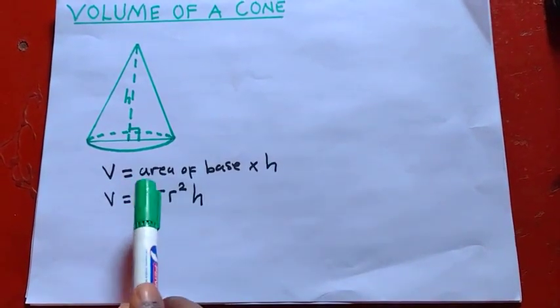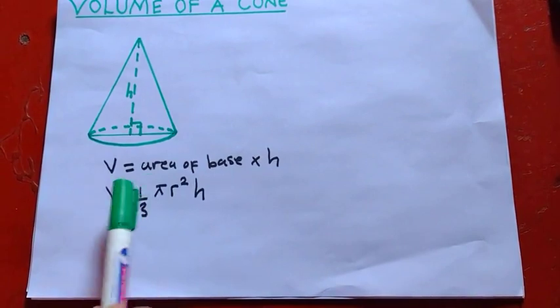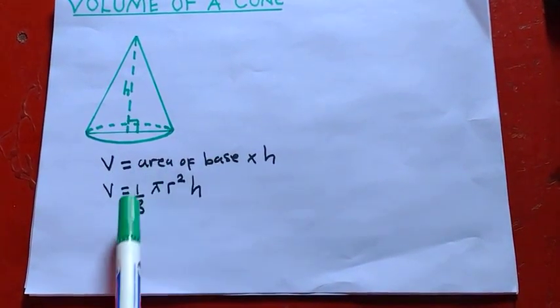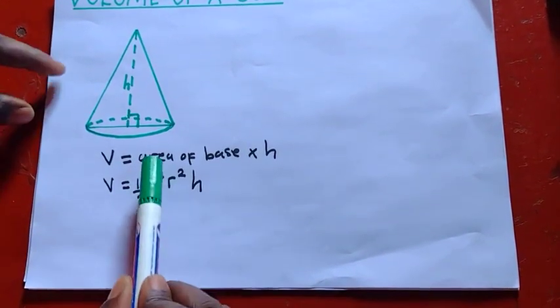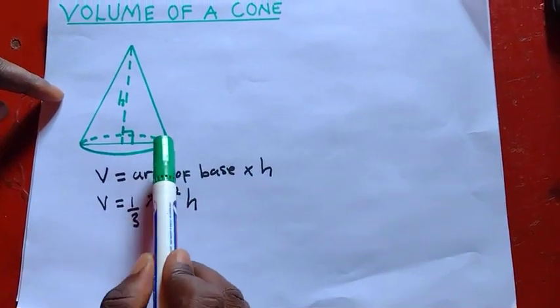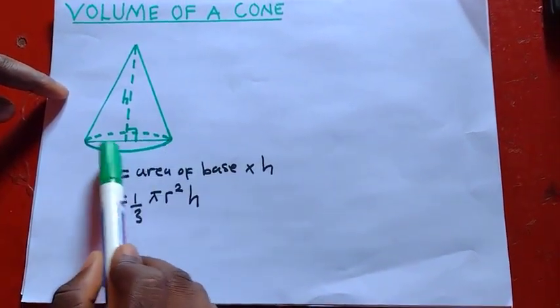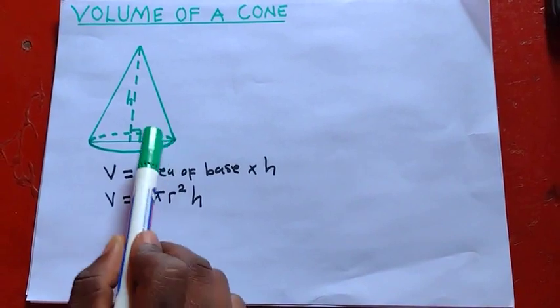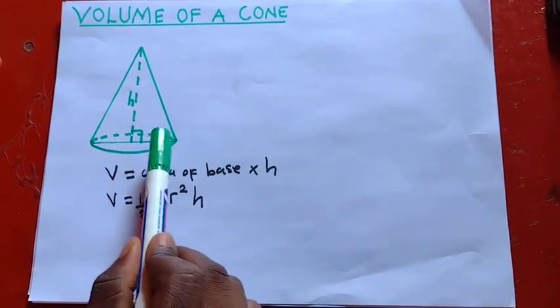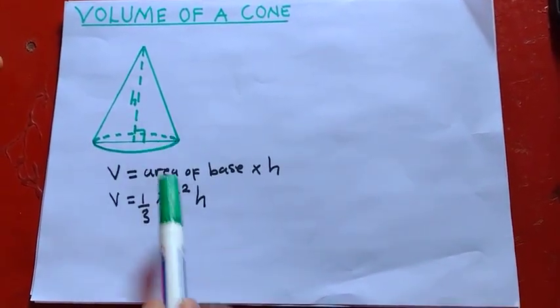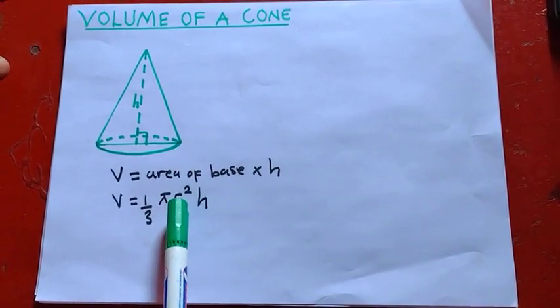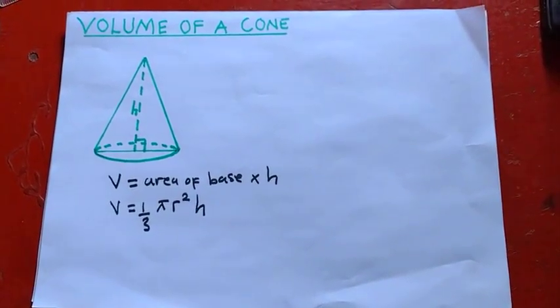So this is how we can use this formula for finding the volume of the cone. So volume is equal to area of base times height. Now, here we have area of base. We can put 1 over 3. Then the area of base that we are talking about is this base of this cone right here. Because we have said this base is a circle. So we are going to use the area of the circle, which is π r squared, okay? Then multiply it with what? With h.